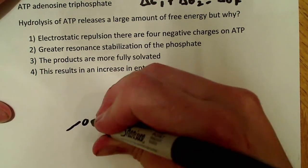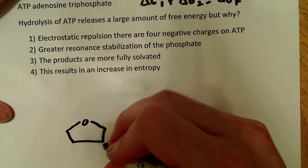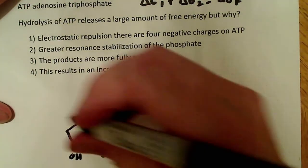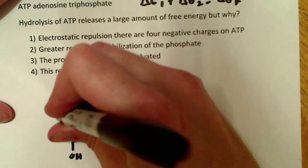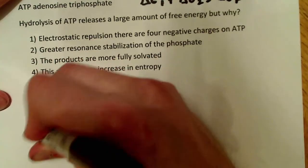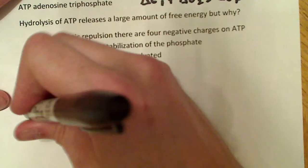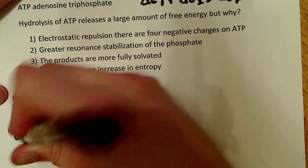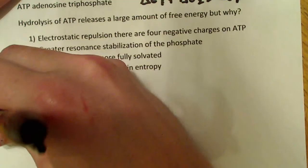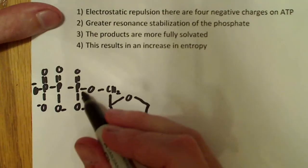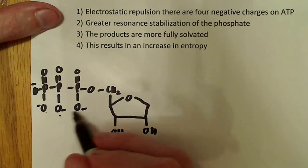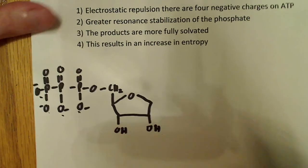Going back to our organic chemistry days — I'll try and draw the ATP molecule. There's a hydroxyl down here, another one down here, and there's a CH2 right there. This is where the phosphates are attached, and what these are is phosphodiester bonds. There's a negative charge on this one, another negative charge here, another negative charge on the end, and one more right there. So here are the three phosphates — one, two, three — with four negative charges. These four negative charges are important.